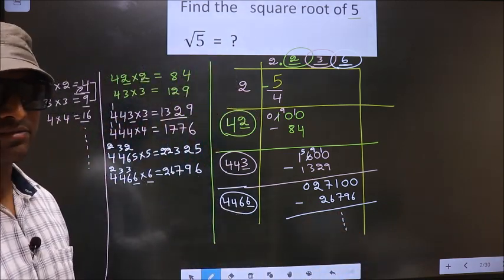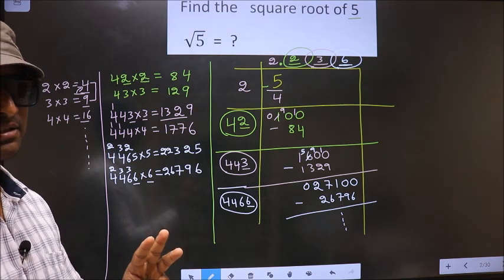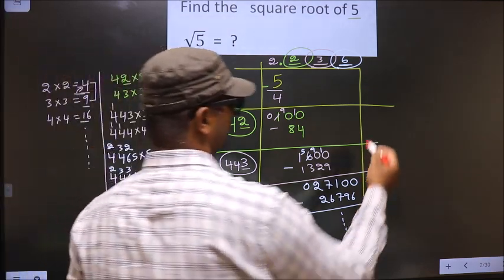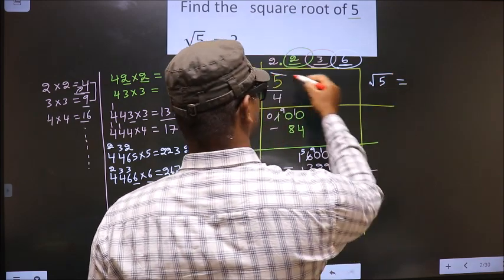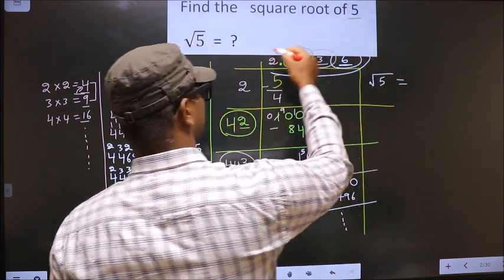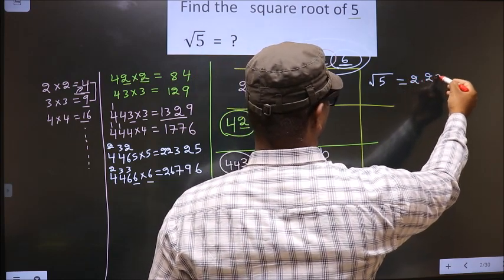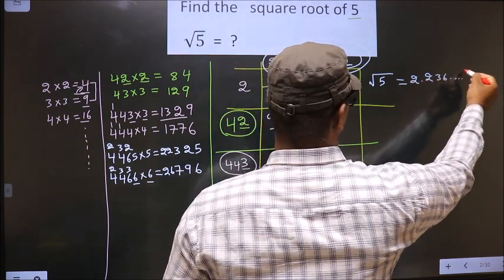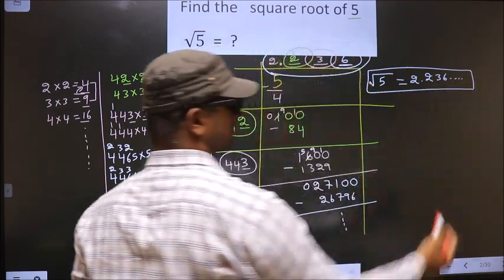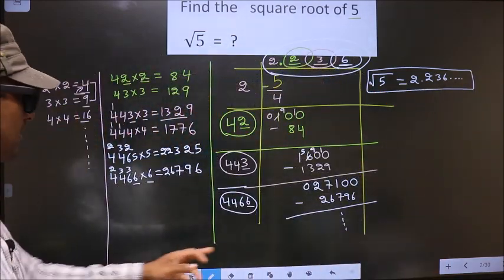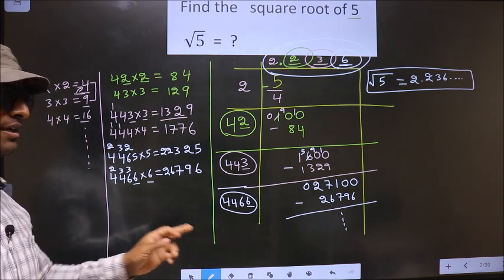It is enough if you calculate up to 3 decimal places. The square root of 5 is 2.236 and so on. This is our answer.